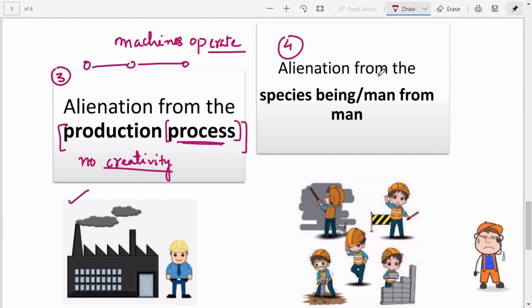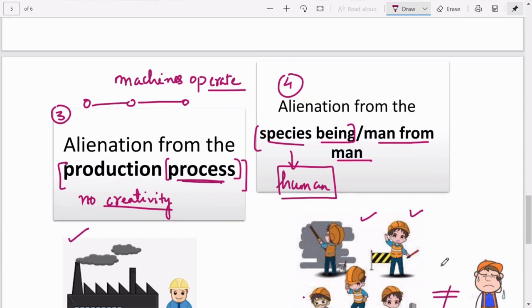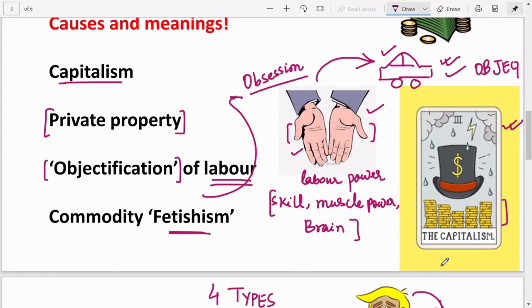Finally, number four - Marx talks about alienation from species being, or man from man. Species being means he talks about the human species as a whole - how working constantly, we have no connection with each other. In a capitalist system, people are so obsessed with work, they are working so much every day to earn money that they do not feel connected to their own human being, to human society. These are the four main types of alienation that you have to remember.